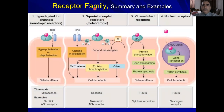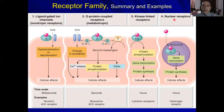So the receptor family. We have four classes of receptors: ligand-gated ion channels, G-protein coupled receptors, kinase-linked receptors, and nuclear receptors.